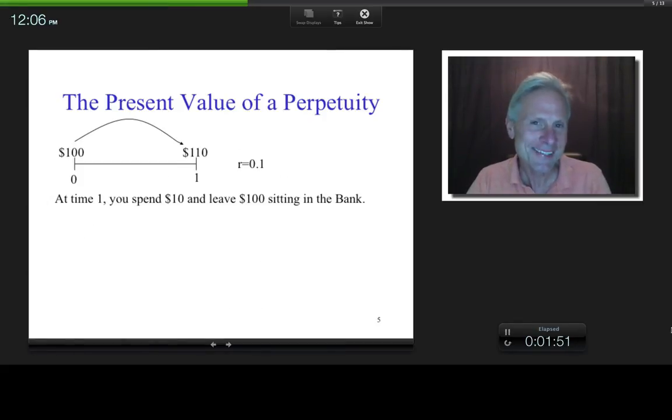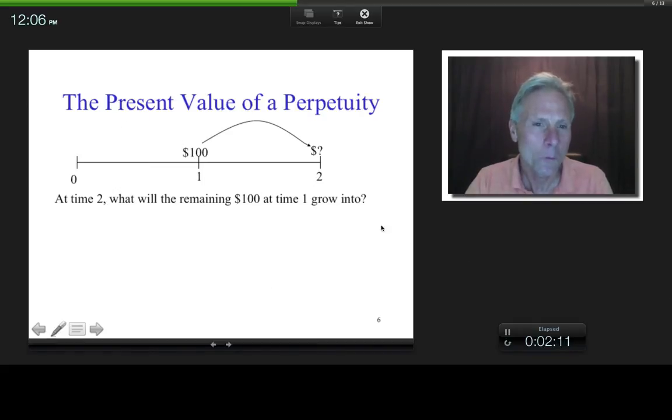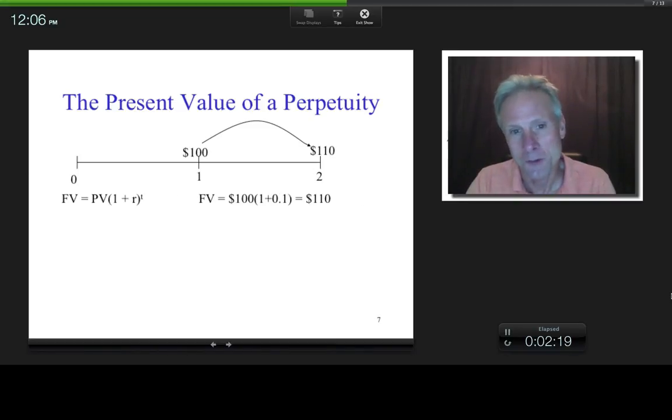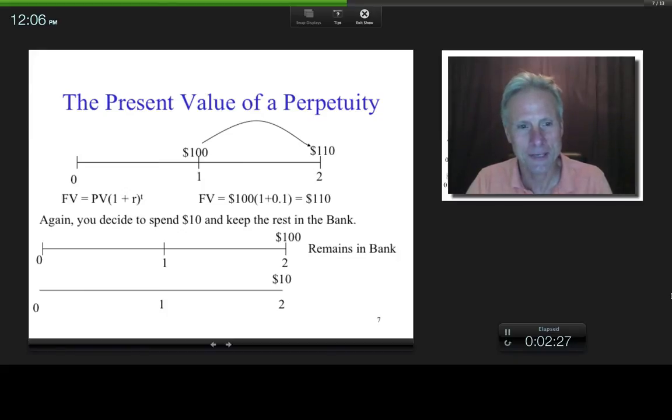So let's say at time 1 you say, you know what, I think I'm going to spend $10 and I'm going to leave $100 sitting in the bank. So $100 stays in the bank and you get to spend $10. So at time 2, what will this $100 grow into? Well, the rate's 10%, right? So $110, right? And let's say again, you know what, let's spend $10 and we'll keep $100 sitting in the bank.